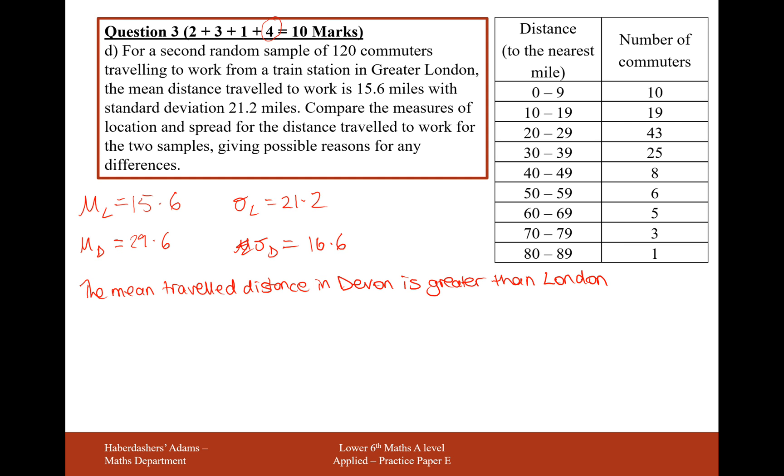Now, it's probably because if you're comparing a city and a county, the county is going to be much greater in distance, much spread out than the city. The population will be spread out in a county rather than a city. So that's our two marks for the measure of location.